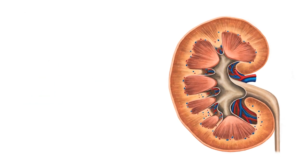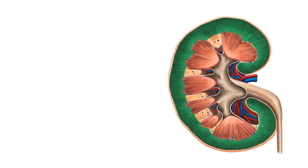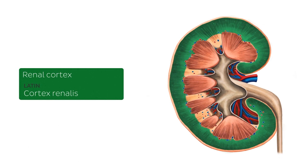As you can see here in this section of the kidney, we see the renal cortex highlighted in green, which is the outer layer of the body of the kidney found between the fibrous capsule of the kidney and the renal medulla. This outer layer is an estimated 6 millimeters in thickness, and ultrafiltration occurs in the renal cortex.